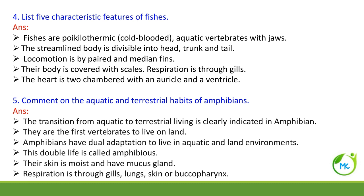List five characteristic features of fishes. Fishes are poikilothermic, cold-blooded aquatic vertebrates with jaws. The body is streamlined and divisible into head, trunk, and tail. Locomotion takes place by means of paired and median fins. The body is covered with scales. Respiration takes place through gills, and the heart is two-chambered — an auricle and a ventricle.